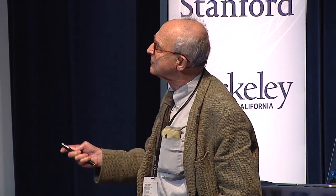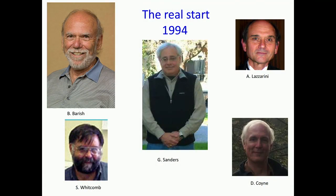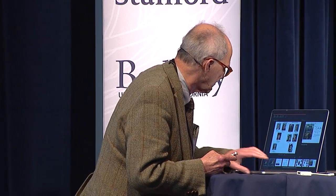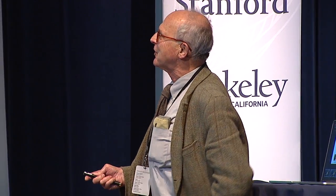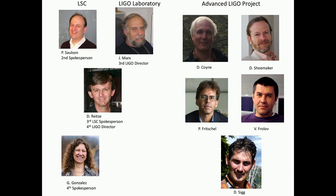I just want to show some pictures of people critical to this whole thing. This is Barry Barish, who ran the project at the end and made it happen. Stan Whitcomb has been on this project for years as chief scientist. Barry brought Gary Sanders as project manager. Here are two key people — Al Lazzarini, now deputy director of LIGO, and Dennis Coyne, the chief engineer. These are the spokespeople of the LIGO scientific collaboration — a collaboration of a thousand people from 50 or so institutions.